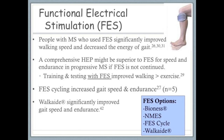Functional electrical stimulation is another intervention that PTs can use with patients who have MS. FES that sends signals to the tibialis anterior to dorsiflex the foot significantly increases walking speed and decreases energy expenditure during gait activities. However, FES use should be continued after training if the equipment is available because training effects seem to decrease without it. FES cycling also may provide transferable changes in gait speed and endurance for individuals with MS. The Walk Aid, a type of FES, significantly improved gait speed and endurance in people with MS. There are many different types of FES including the Bioness, NMES, the FES cycle, and the Walk Aid.